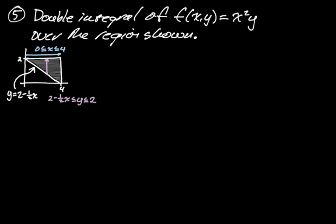With this in mind, we can set up our integrals. The one that has constants — 0 to 4 — has to go last. Anything that depends on a variable has to go on the inner integral. So we go 0 to 4 for x, and then from 2 − ½x up to 2 for y. Our integrand is x² times y, dy dx.